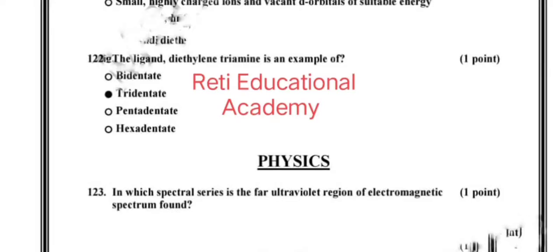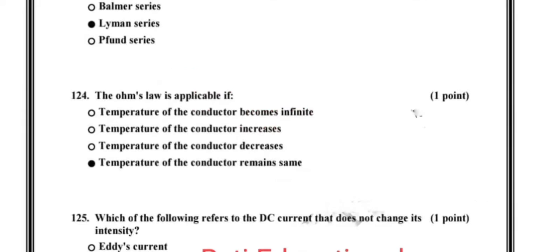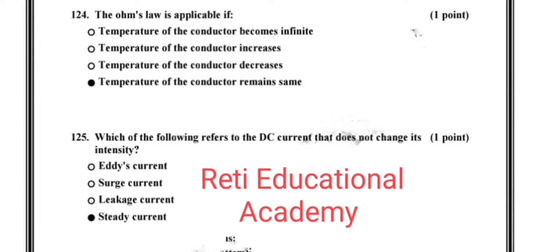Assalamualaikum, welcome back. I am Rati Educational Academy YouTube channel. In this video I am going to share physics MCQs from Sindh MDK 2023, conducted by Jinnah Sindh Medical University. Question number 123: in which spectral series is the far ultraviolet region of the electromagnetic spectrum found? The correct option is Lyman series.